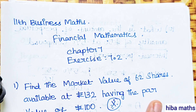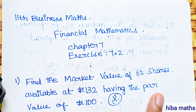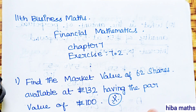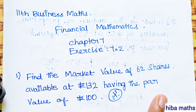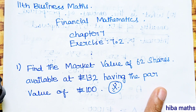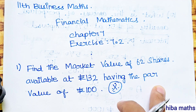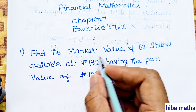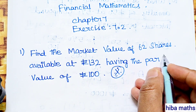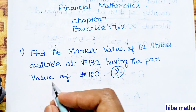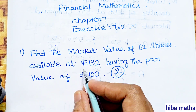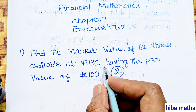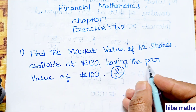Hello students, welcome to Hibamax 11th Standard Business Maths, Financial Mathematics Chapter 7, Exercise 7.2. First question: find the market value of 62 shares available at rupees 132.